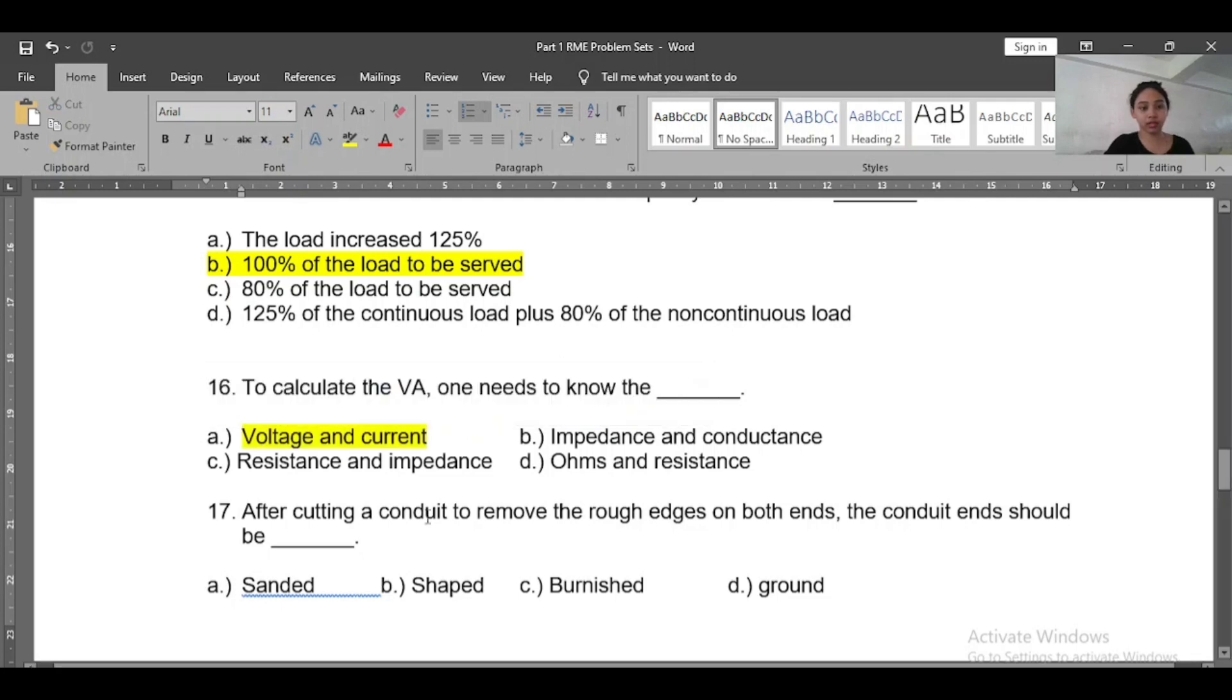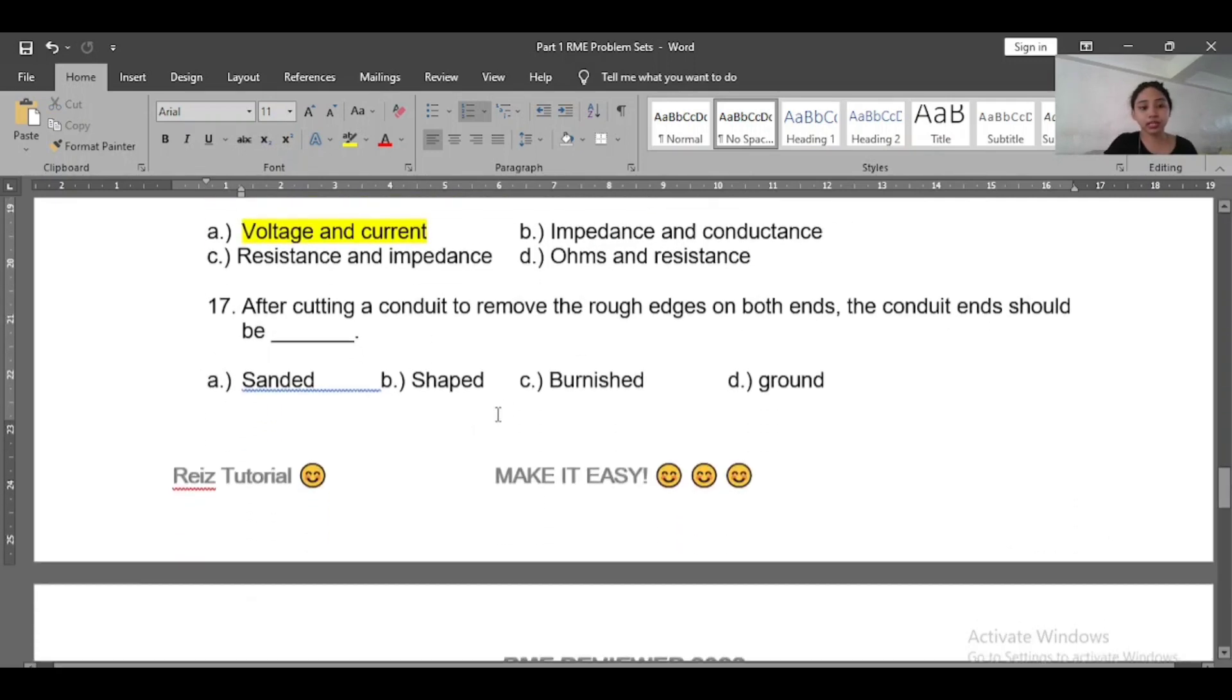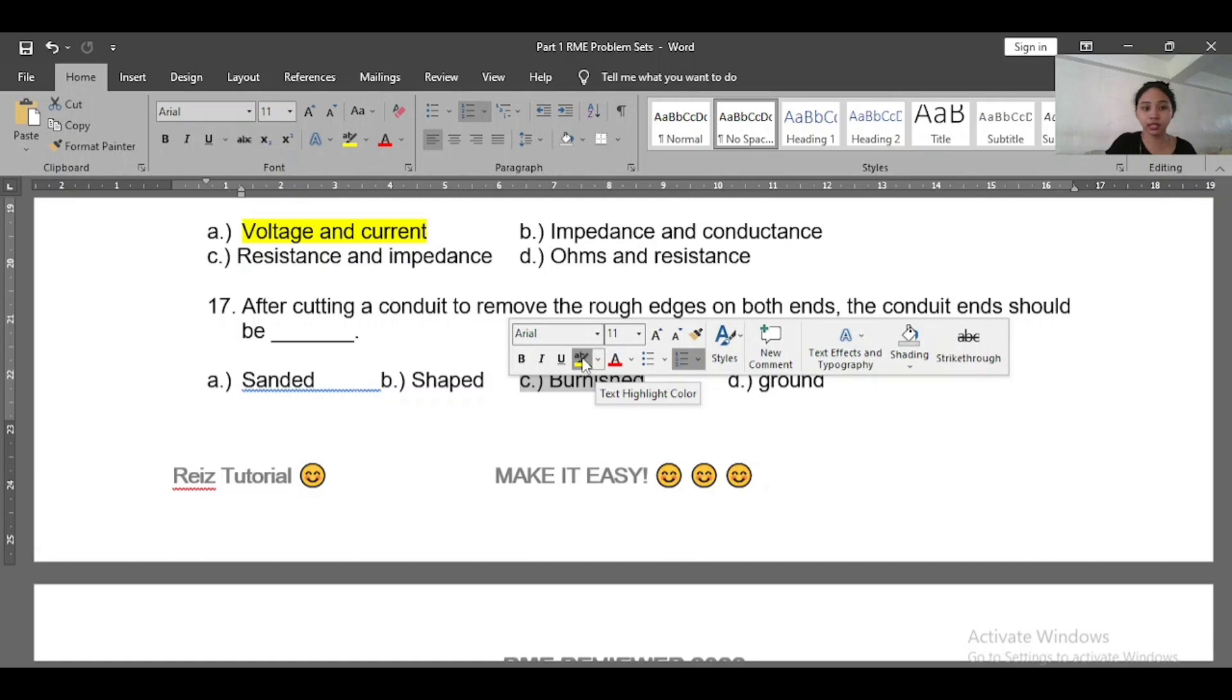And then number seventeen: After cutting a conduit to remove the rough edges on both ends, the conduit ends should be sanded, shaped, burnished, or ground. So the answer is burnished. The answer is burnished - to polish. Burnish is to polish or to smoothen the edges since you cut the conduit.